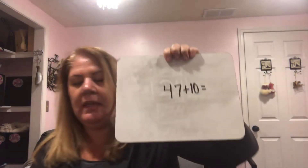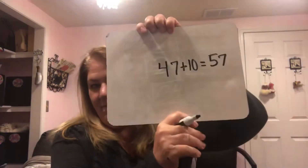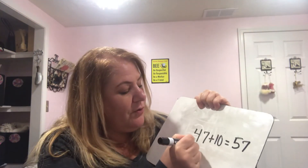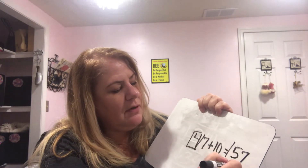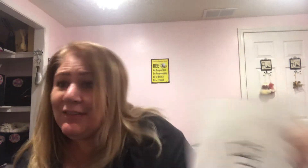Write down 47 plus 10 and then an equals sign. This is where you're using your brain — we don't have a hundred grid. Ten more than 47, one more group of 10. Did you put 57? There were four groups of 10, now there's one more, so there are five groups of 10. 47 plus 10 is 57 — we can do that in our heads!